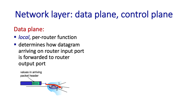Now our study of the network layer is going to be split across two chapters and two broad topics. The first topic is what we'll call the data plane — a focus on per-router, per-IP-device local functions.